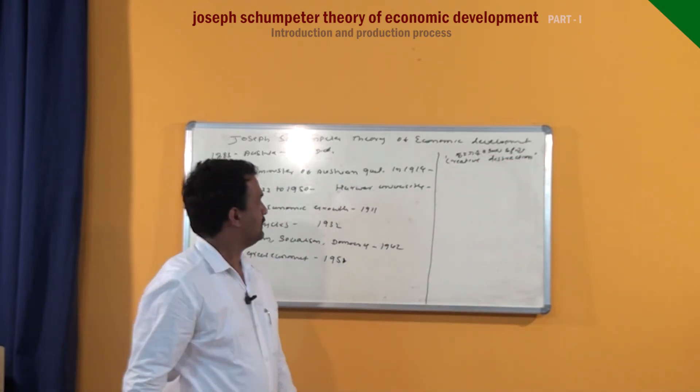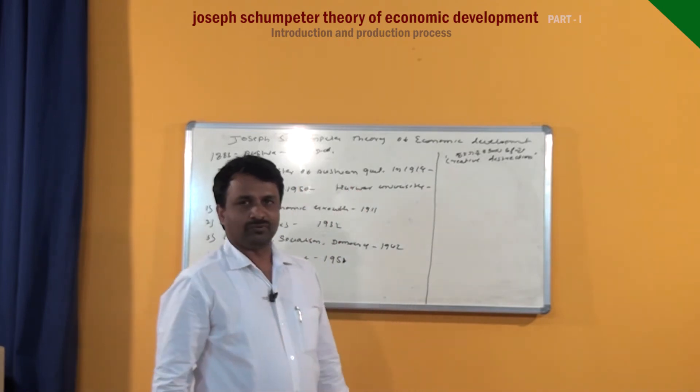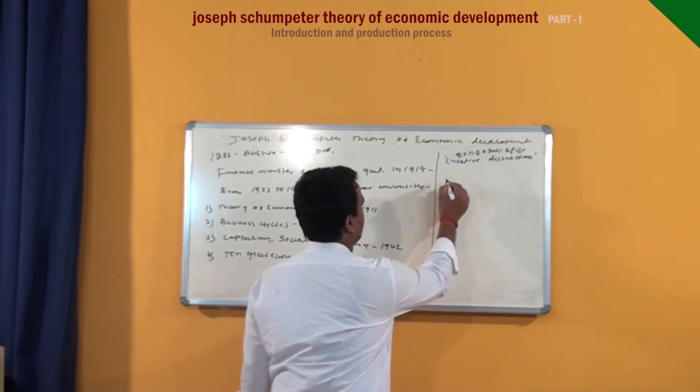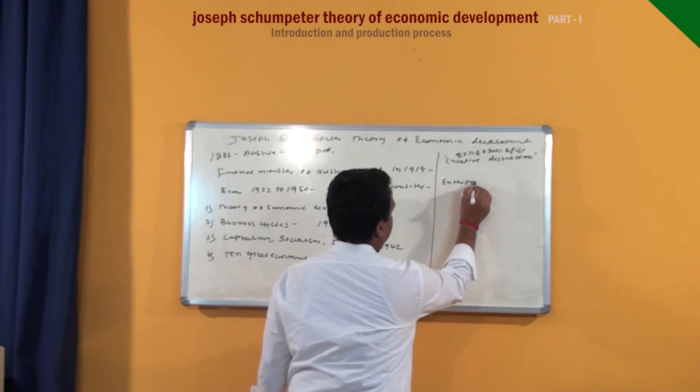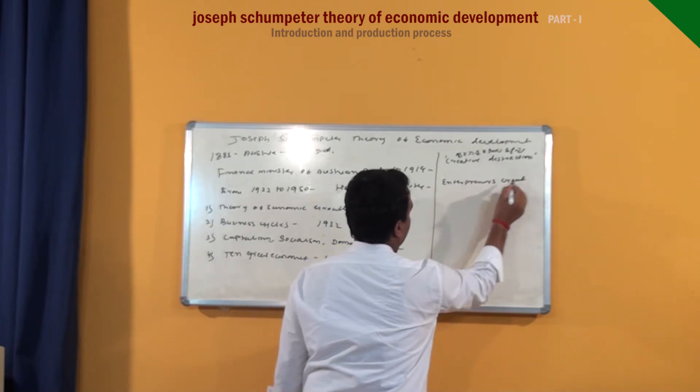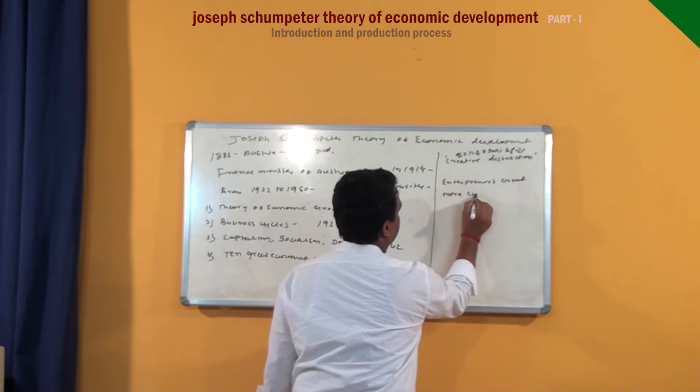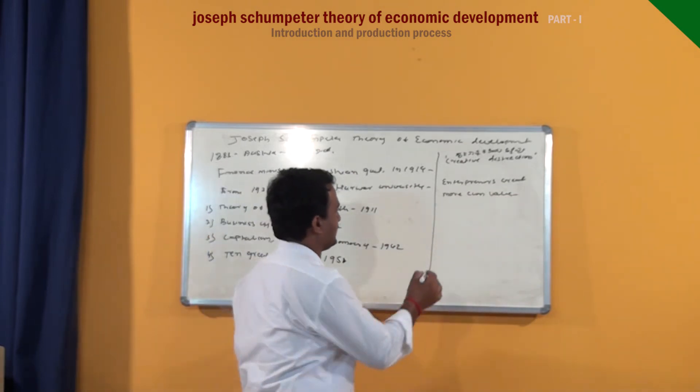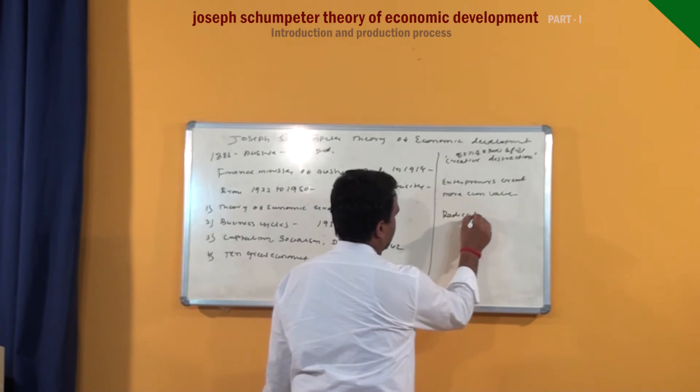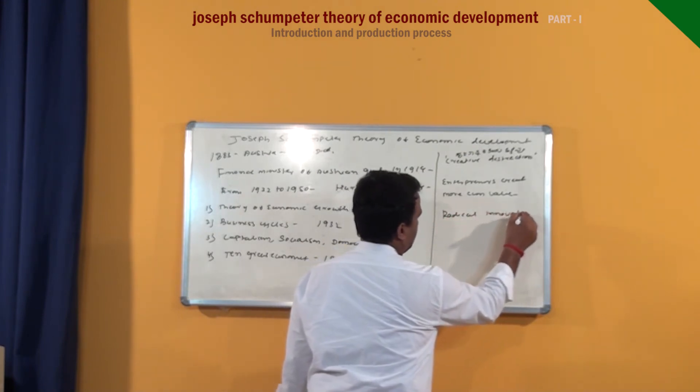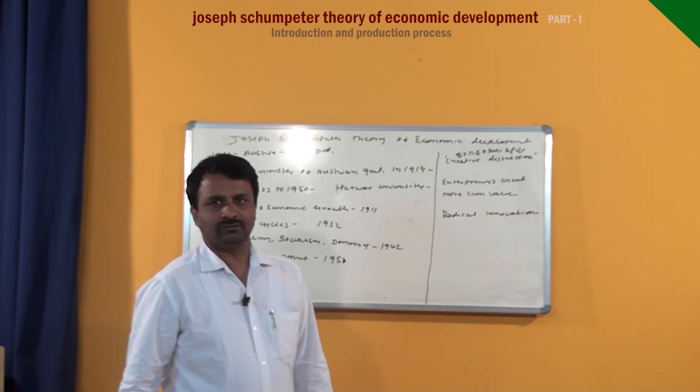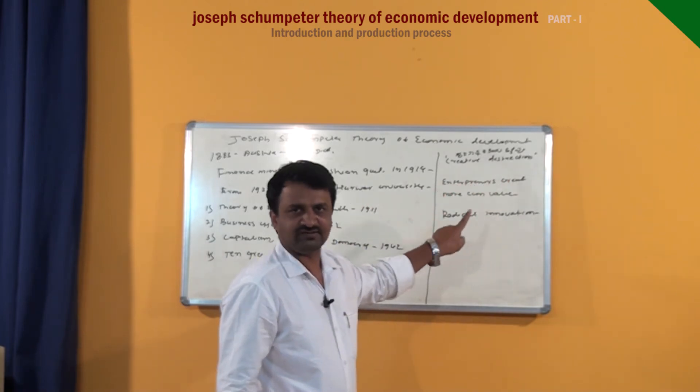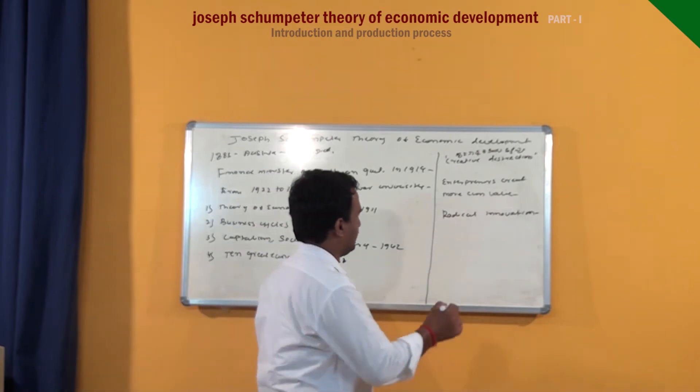According to him, in the production process or growth process, entrepreneurs create more economic value by making radical innovation. New innovation that destroys or disrupts the older innovation. When innovation stops, economy stays in stationary equilibrium.